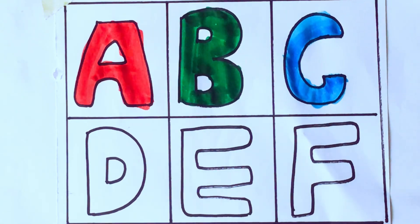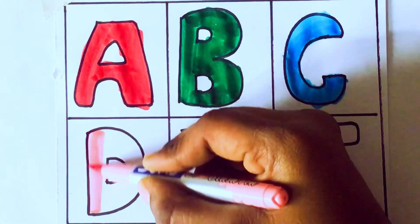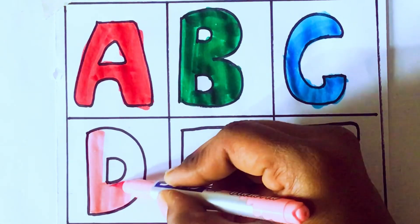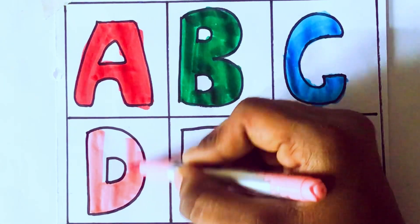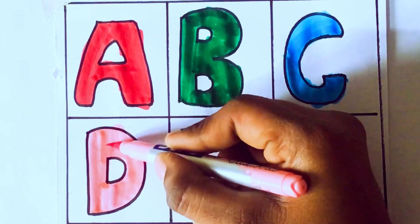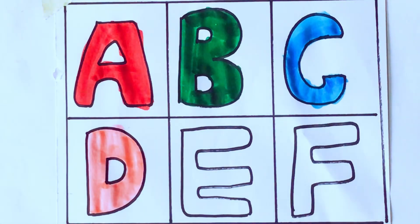Light pink color. D comes after C. Which letter comes next? D for Dog. D-O-G, Dog.